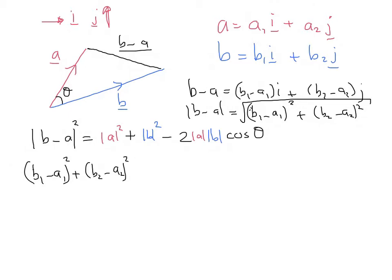And this is going to equal: we've got the length of a squared, which is a1 squared plus a2 squared; then we've got the length of b squared, which is b1 squared plus b2 squared; and then minus 2 times the length of a times the length of b times cosine theta.